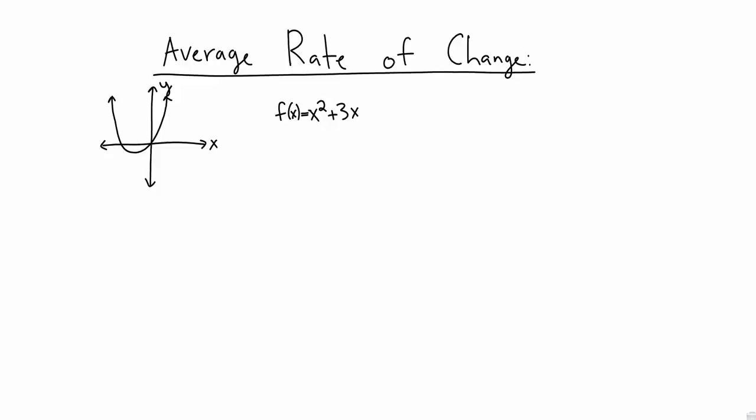Let's look at the following two points on this graph. This first point is the point corresponding to the input minus 1. The second point is the point corresponding to the input positive 2.